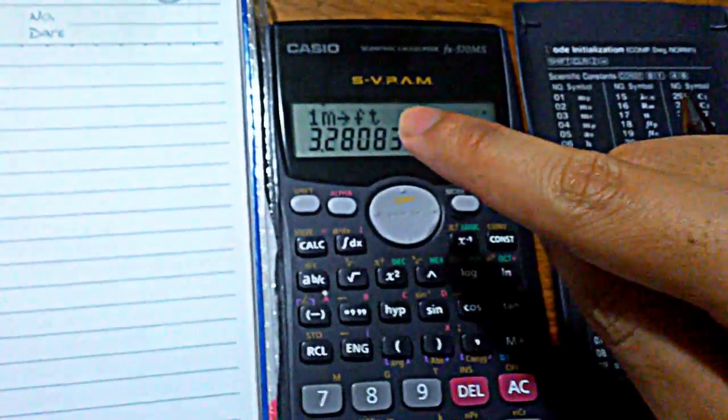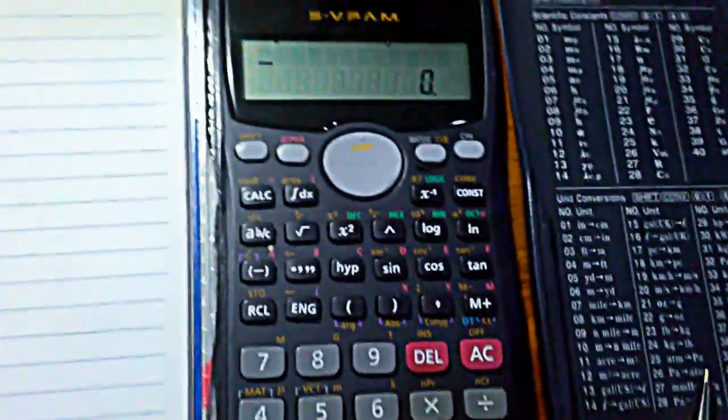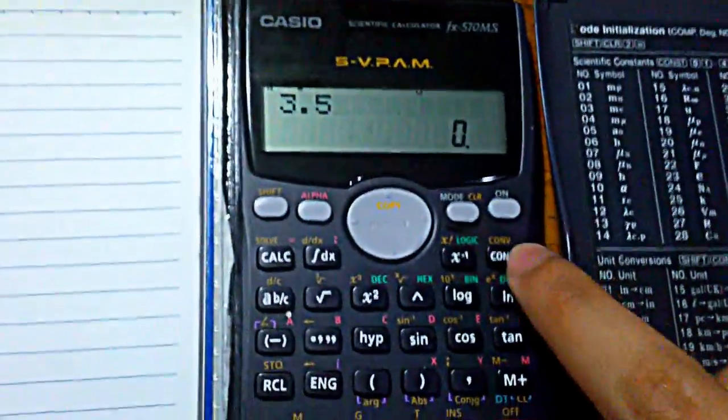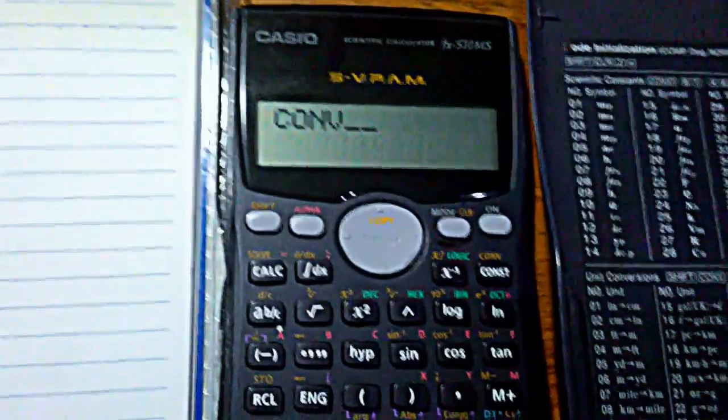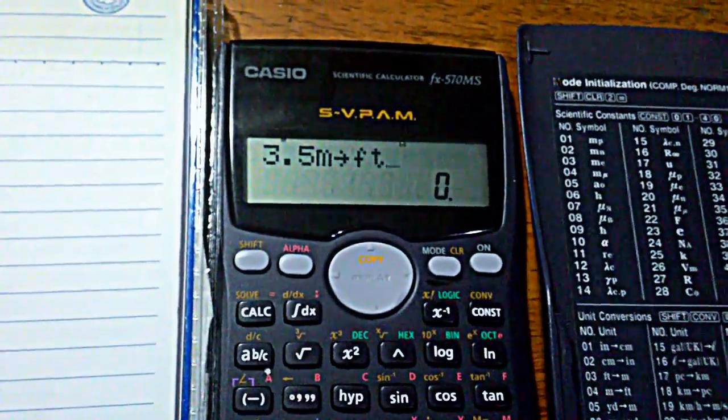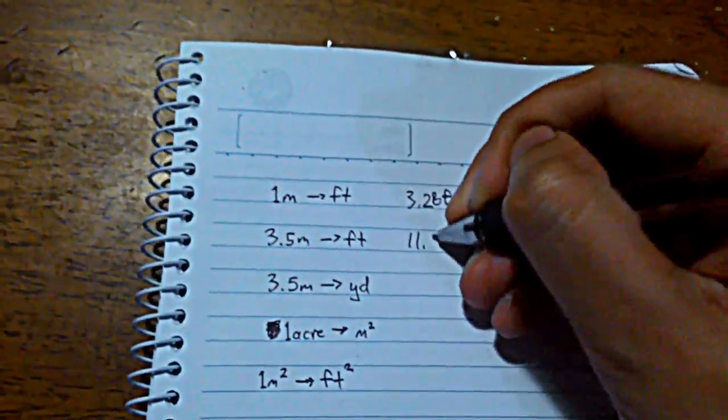Now that figure that I've inputted in the calculator could be any. It could be one, it could be 7.8, it could be 3.5. So let's try that again with 3.5. So input first 3.5, and then use the convert function, shift, and then this button right here to activate the convert function. We know that the code is 0, 4 to get from meters to feet. So that's what I input here, 0, 4. And there you go. 3.5 meters to feet. Then press equals, 11.48.